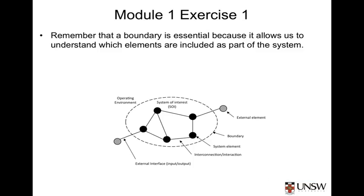First, a bit of revision. A boundary is essential because it allows us to understand which elements are included as part of the system — you could say the boundary actually defines the system. The boundary defines our system of interest: elements on the inside are part of the system, elements on the outside are not, and the connections across the boundary are our external interfaces.